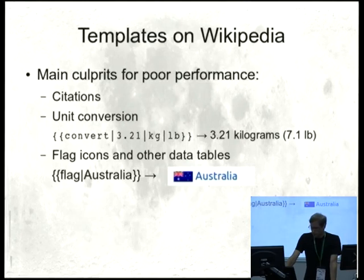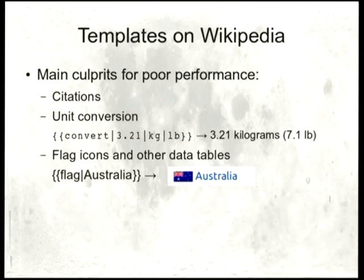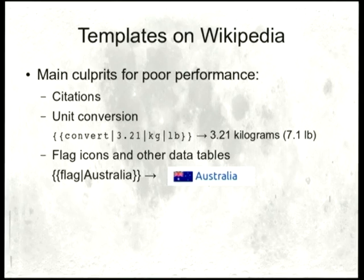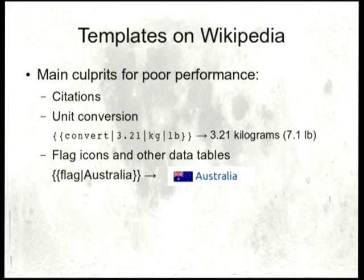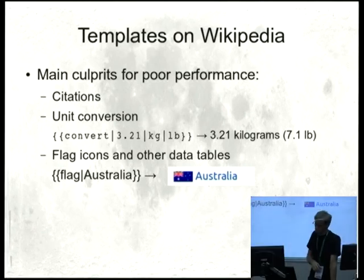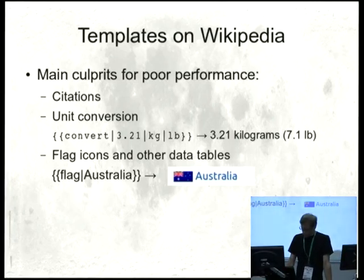Performance-wise, it's slow. The main culprits are citation templates — you might get hundreds of them on a single article. Unit conversion can get hundreds on a single article as well. We have a template that will convert basically any physical unit to any other unit, with appropriate or configurable levels of precision. A recurring class of templates are data tables — for example, a flag icon. The user just says 'flag Australia' and the template looks up a table of all the flags of all nations and gives you the flag of Australia. That's not implemented efficiently.